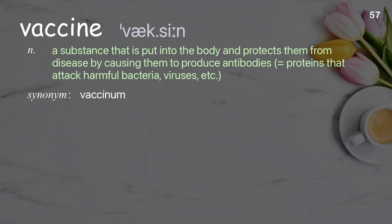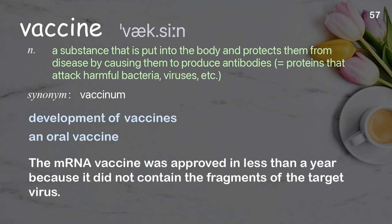Vaccine: a substance that is put into the body to protect them from disease by causing them to produce antibodies — proteins that attack harmful bacteria, viruses, etc. Examples: development of vaccines, an oral vaccine. The mRNA vaccine was approved in less than a year because it did not contain the fragments of the target virus.